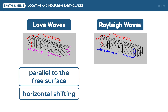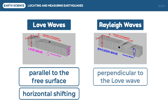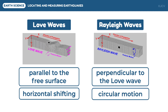On the other hand, as seen in the animation for Rayleigh waves, the ground behaves like ocean waves. This shows perpendicular shaking and causes circular motion of the ground. This is evident when the ground moves up and down during earthquakes.